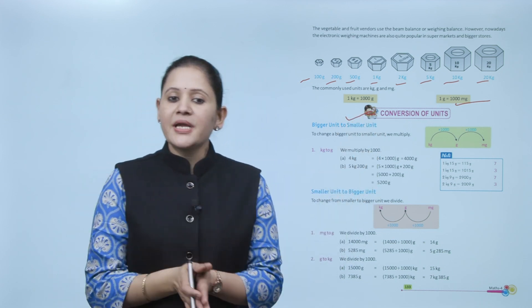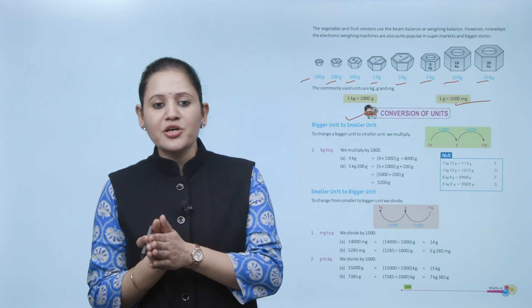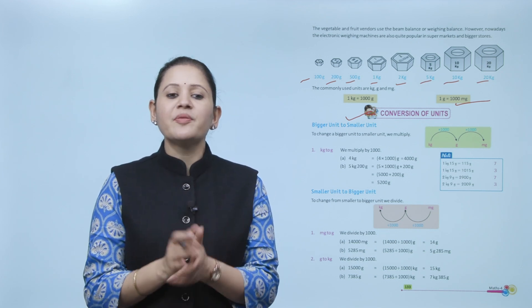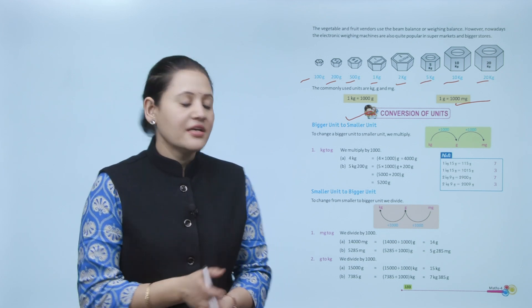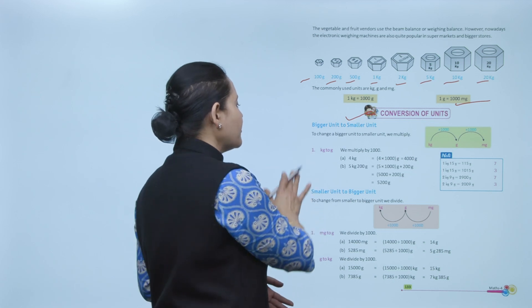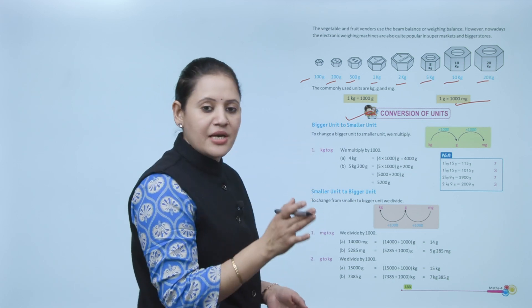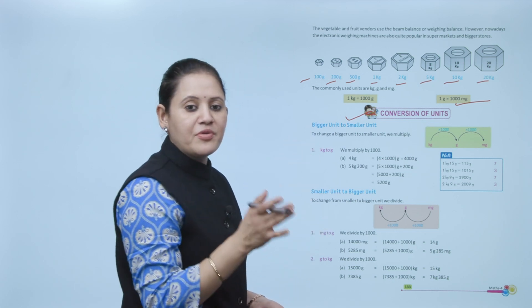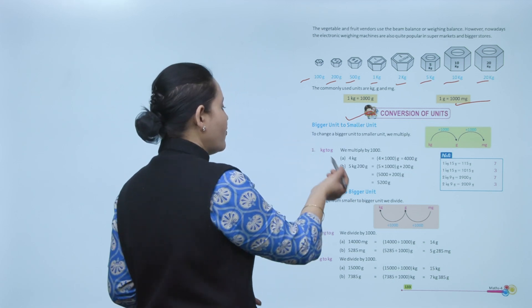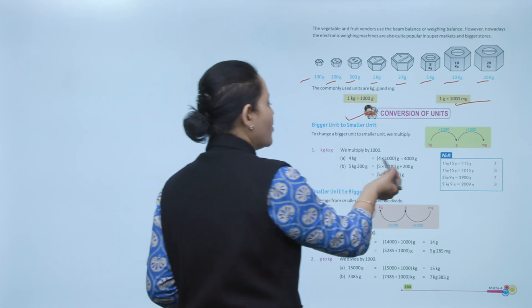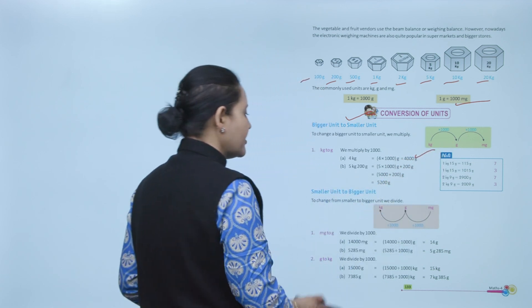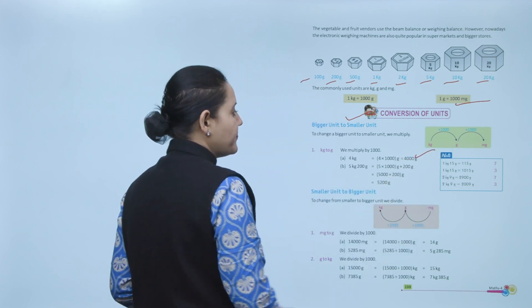To change a bigger unit to a smaller unit, we multiply. Here, kilogram to gram: multiply by 1000. So 4 kg equals 4 × 1000 = 4000 grams.